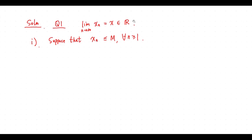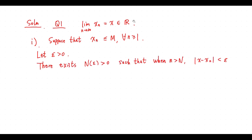Solution. Question 1. Suppose that x_n is less than or equal to M for any positive integer n. Let epsilon be greater than 0. There exists big N greater than 0 such that when n is greater than big N, we have this inequality.